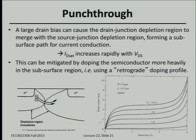Punch-through is just DIBL taken to the extreme. As drain voltage increases, the reverse-bias drain junction depletion width grows until the depletion regions of the source and drain merge beneath the surface. At that point, the potential barrier is low enough that significant diffusion and drift current flows from source to drain directly through the depletion region.